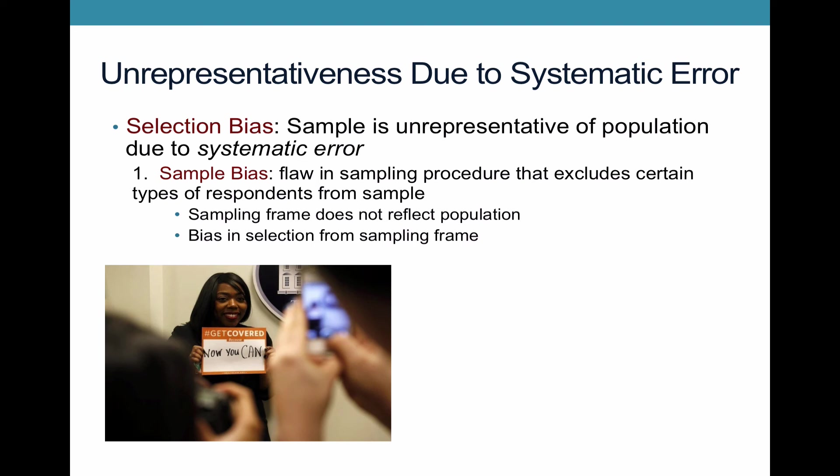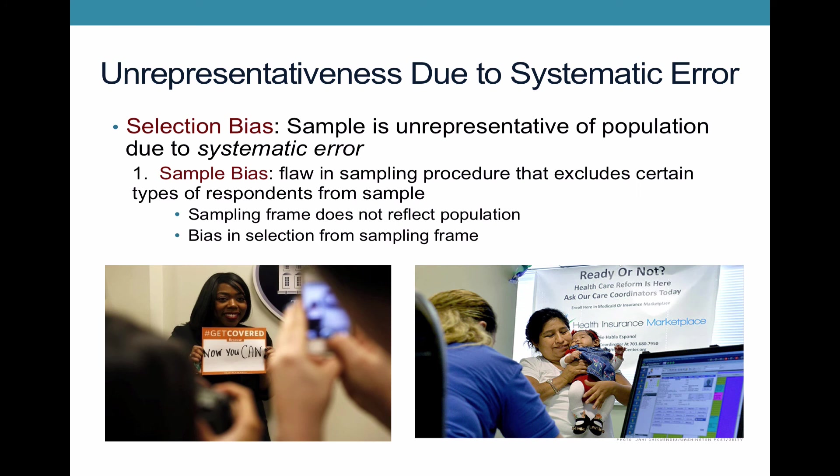Another way you can have sample bias is if there's bias in selection from the sampling frame. Say you have a sampling frame of all these landlines and you only call the first 500 names on the list — maybe only people whose names begin with A. Certain ethnicities may be less likely to have names beginning with A, having more names that begin with M or R. So they won't be included in the sample, you'll be over-sampling certain groups, and this could bias against certain groups such as Latinos if they are more or less likely to support Obamacare.